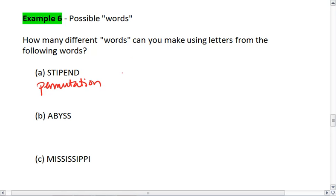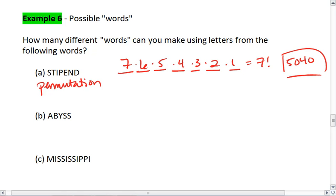Where we have 7 possible letters and once we use this one, it's gone. So we have 7, 6, 5, 4, 3, 2, 1 or 7 factorial. Which gives us 5,040 different possible ways to rearrange the letters in stipend.